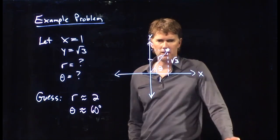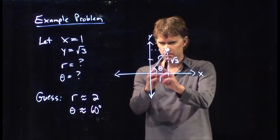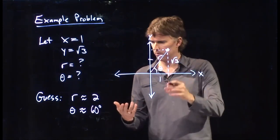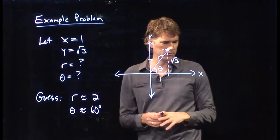Okay. I mean clearly we're in this first quadrant so theta has to be a positive number. Clearly that r is bigger than 1 and bigger than root 3 and could be 2. Let's figure it out.